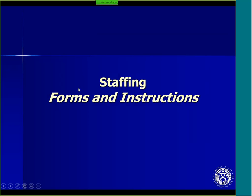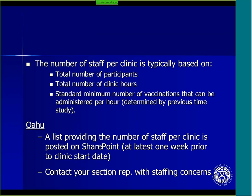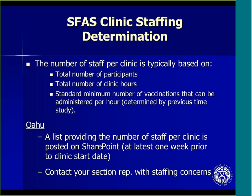Now Alicia will provide general information about staffing and a review of clinic staffing forms. How we determine the number of staff for each clinic depends on several factors, including the total number of participants (based on total consent forms collected per clinic), the total number of clinic hours as per the clinic schedule, and a standard minimum number of vaccinations that can be administered per hour, which was determined in a clinic flow study conducted in previous Stop Flu at School clinics. For Oahu clinics, a list providing the number of staff per clinic is posted on SharePoint at least one week prior to the clinic start date.